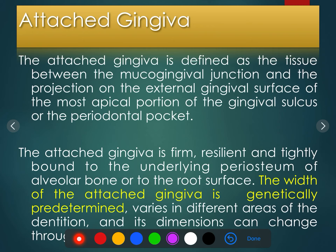This is molecular and cell biology of gingiva. Moving on to what is attached gingiva — as always, these are quite overlapping topics. But the core the examiner would be looking for is always the main content. The rest you can always include as extra components. Attached gingiva is defined as a tissue between the mucogingival junction and the projection on the external gingival sulcus of the most apical portion of the gingival sulcus or the periodontal pocket.